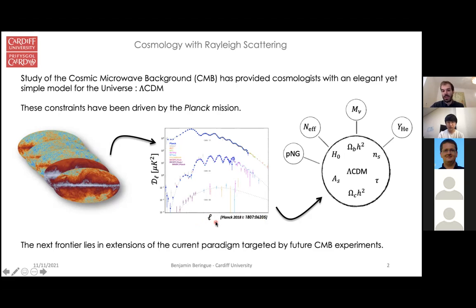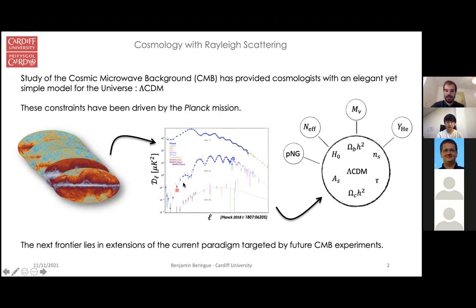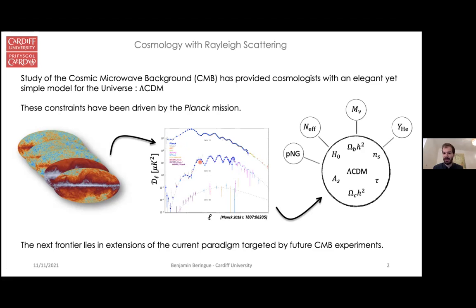We have good reasons to believe the distribution of these anisotropies is Gaussian, as most theoretical models predict. This means all the information in these maps can be compressed into the angular power spectrum — a measure of the correlation between temperature anisotropies as a function of angular scale. We use L, the multipole moment in the spherical harmonic expansion, where low L corresponds to large angular scales and large L to small scales. We have plots of the angular power spectrum for temperature and for the two polarization modes: E-modes and B-modes.